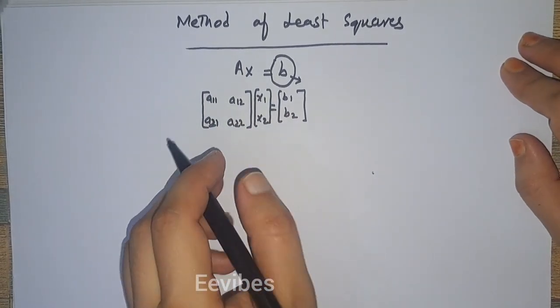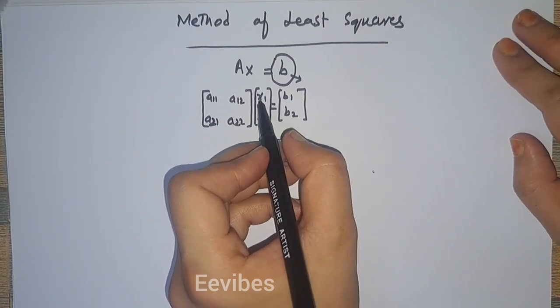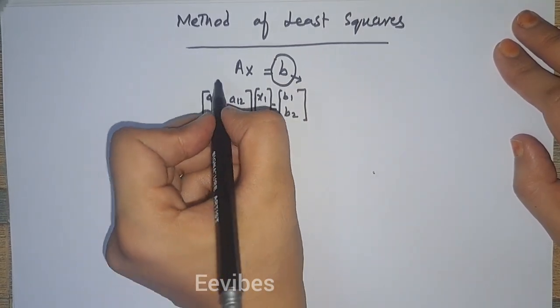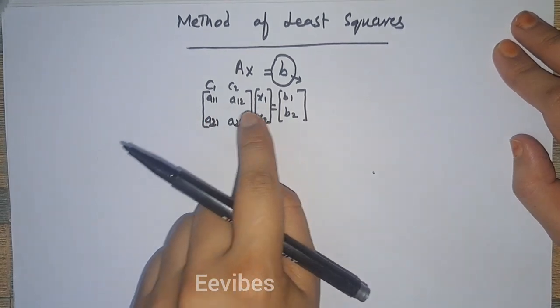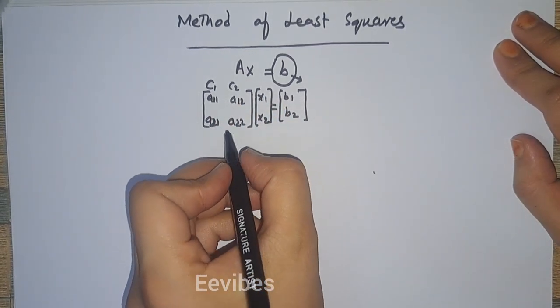Basically, what we do when we solve the system of linear equations, we intend to write B as a linear combination of its column vectors.